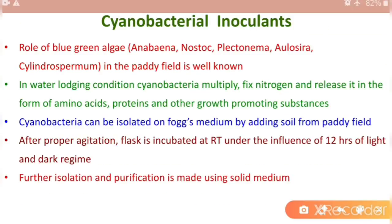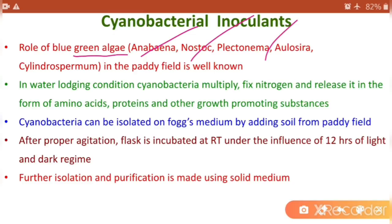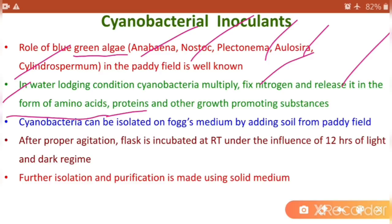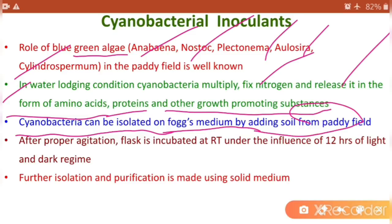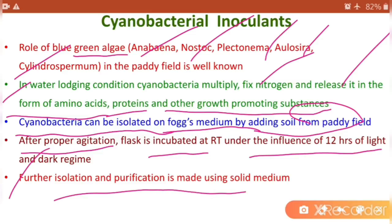The next type is Cyanobacteria inoculants. The role of blue-green algae — such as Anabaena, Nostoc, Plectonema, Allosuria, and Cylindrospermum — in paddy fields is well known. In water-logged conditions, cyanobacteria multiply, fix nitrogen, and release it in the form of amino acids, proteins, and other growth-promoting substances. Cyanobacteria can be isolated on fog medium by adding soil from a paddy field. After agitation, the flask is incubated at room temperature under 12 hours of light and dark conditions, followed by isolation and purification on solid medium.